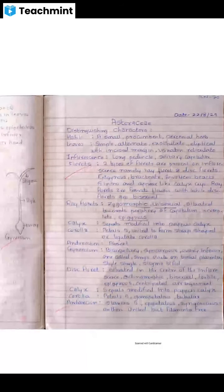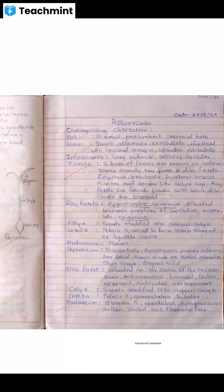Classification: Division Spermatophyta, means the seed-bearing plants. Class Dicotyledonae, with reticulate venation in leaves. Flowers have tetramerous or pentamerous symmetry.